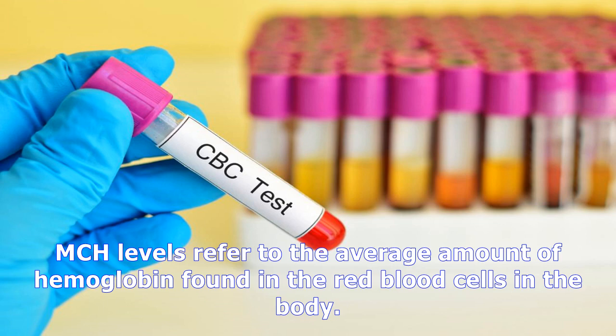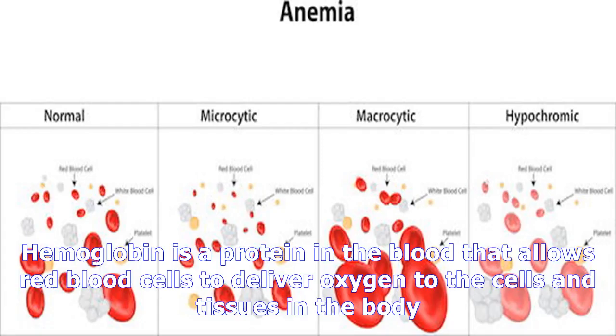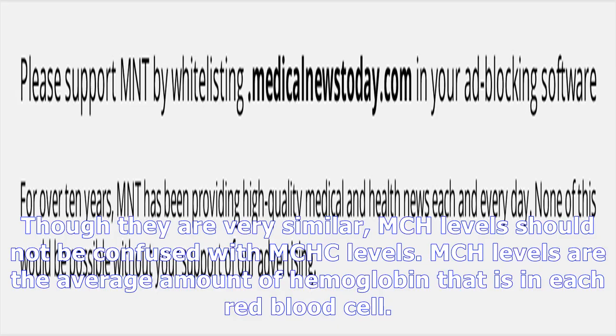MCH stands for mean corpuscular hemoglobin. MCH levels refer to the average amount of hemoglobin found in the red blood cells in the body. Hemoglobin is a protein in the blood that allows red blood cells to deliver oxygen to the cells and tissues in the body.